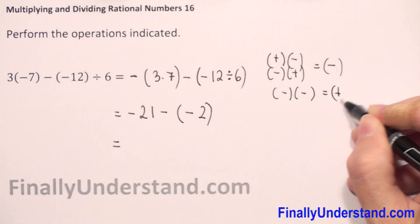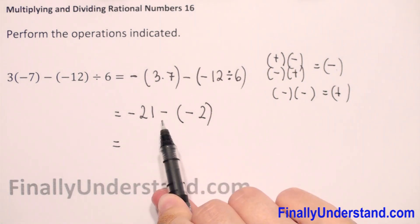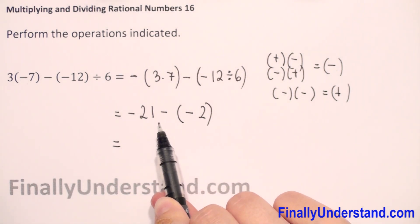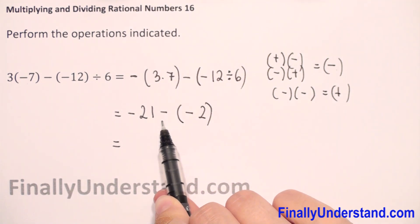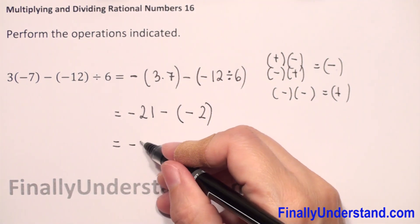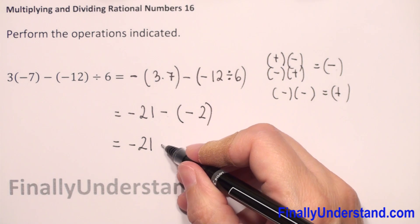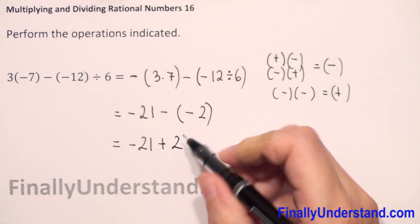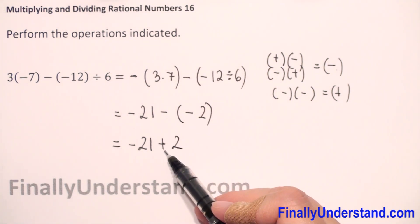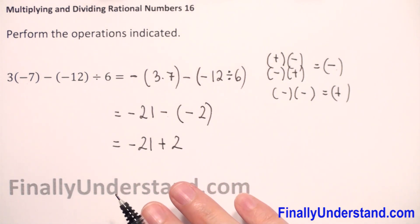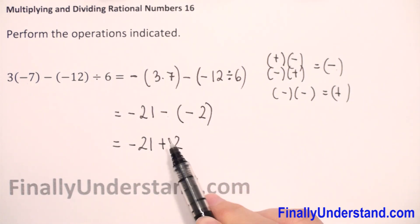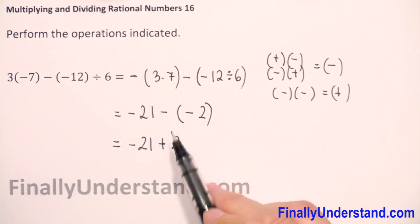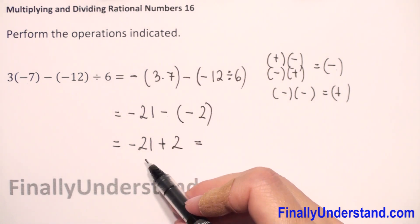Now when we have two negative signs, two negative signs give you always positive. It's subtraction here — we always change subtraction to addition of the opposite. We copy the first number, change subtraction to addition, and the opposite of negative 2 is positive 2. Negative and negative give us positive, so we just write positive sign.